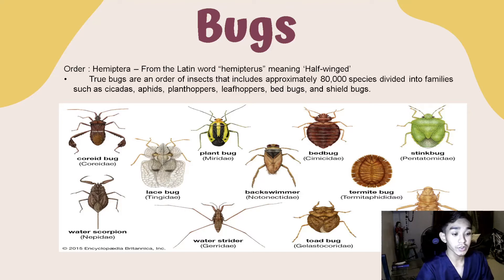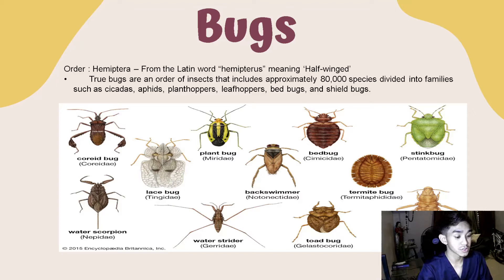So first is Order Hemiptera, from the Latin word hemipterus, meaning half-winged. True bugs are an order of insects that includes approximately 80,000 species divided into families such as cicadas, aphids, plant hoppers, leaf hoppers, bedbugs, and shield bugs. So down here are the examples of true bugs.